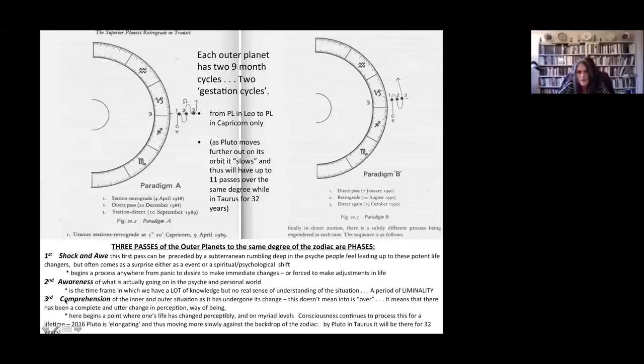The third and final pass of an outer planet over one of your natal planets in transit actually brings a kind of 'aha'—'Oh, I get it, I actually see what's really happening, I understand the process of what I have been going through and calling the astrologer about.' It actually has resulted in a complete and utter change in perception, which doesn't mean you've changed shapes or have to get a new wardrobe, but it does mean that you are now beginning a time in your life where your life has changed perceptibly, on many levels. Consciousness continues to process this for a lifetime.